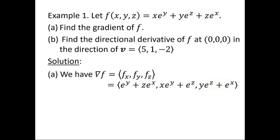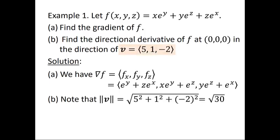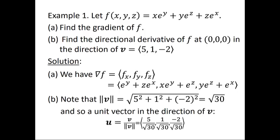So that's the gradient of f for part a. For the directional derivative, we need to work with a unit vector. The length of the given vector v = (5, 1, −2) is √(25 + 1 + 4) = √30. So the unit vector u in the same direction as v is (5/√30, 1/√30, −2/√30).